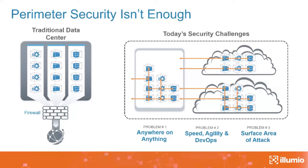We live in an age where we must assume breach. It's a fact of life for business and governments that attacks will happen and the perimeter can be breached. The question is: how can you adequately protect your applications behind the firewall, inside the perimeter, and prevent attackers from moving between applications from low-value assets to high-value assets?